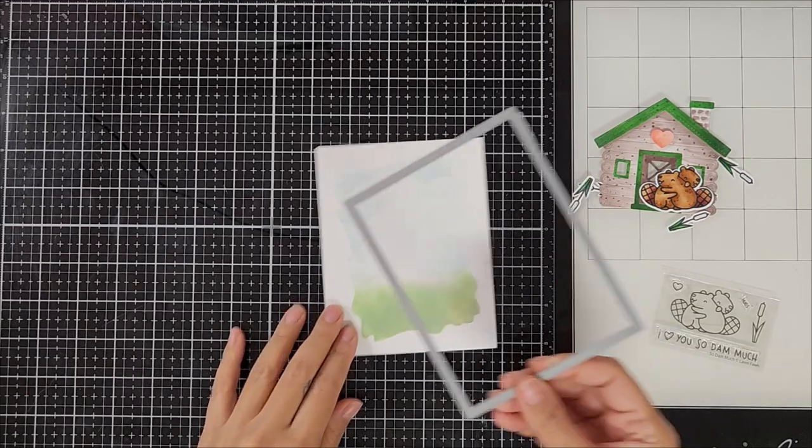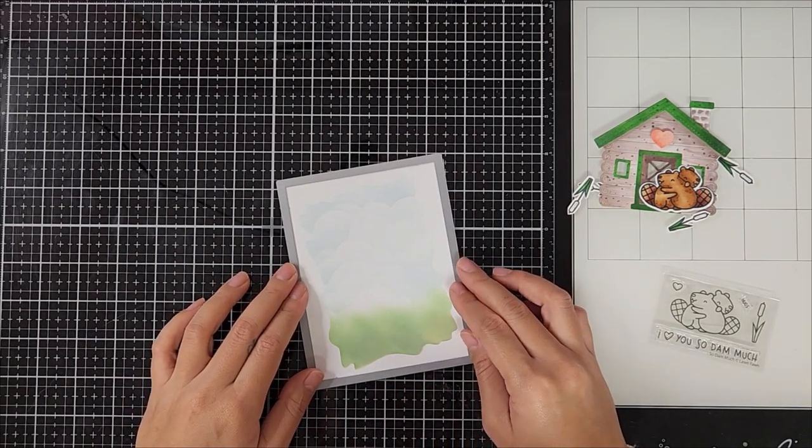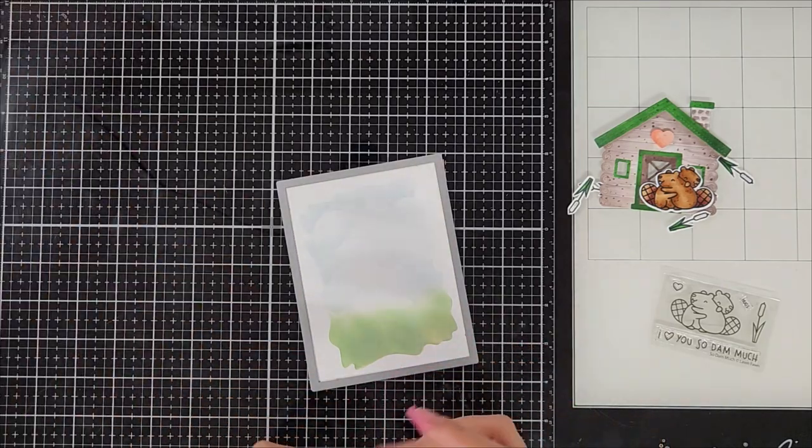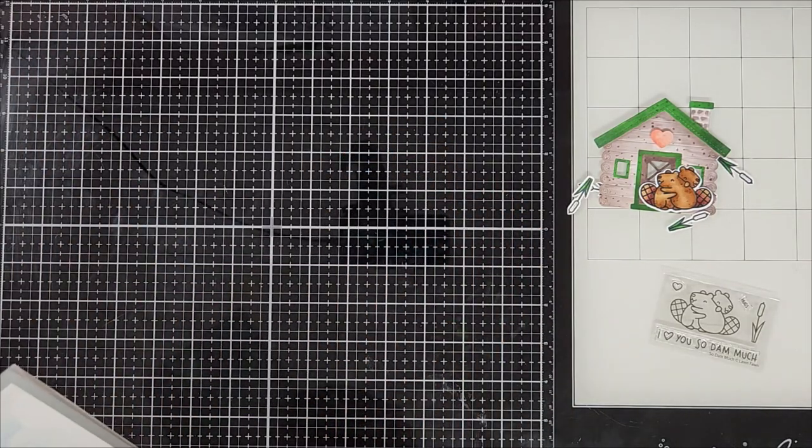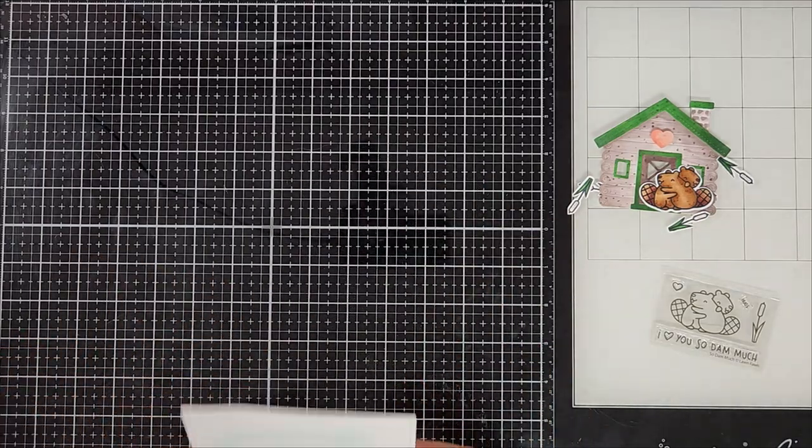So going in with a stitched rectangle die, this one's also from Lawn Fawn, I went ahead and ran that through my die cutting machine. I really like a simple stitch background on my card panel because it creates a nice bit of interest.